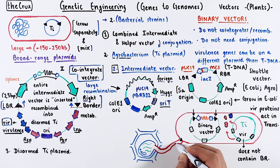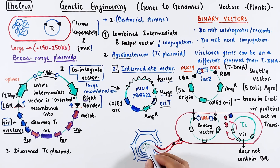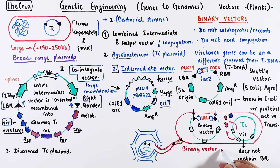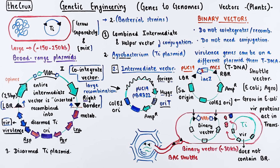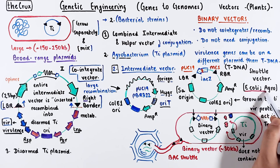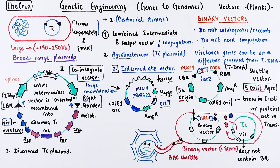This transfer works like it would in a natural scenario. Binary vectors are typically size-limited to around 30 kb. Since it is just a shuttle vector, people have also used BAC-based shuttles — meaning it contains the SA origin of replication — to transfer really large DNA chunks into the plant cell. P1-based shuttles are also available for use.